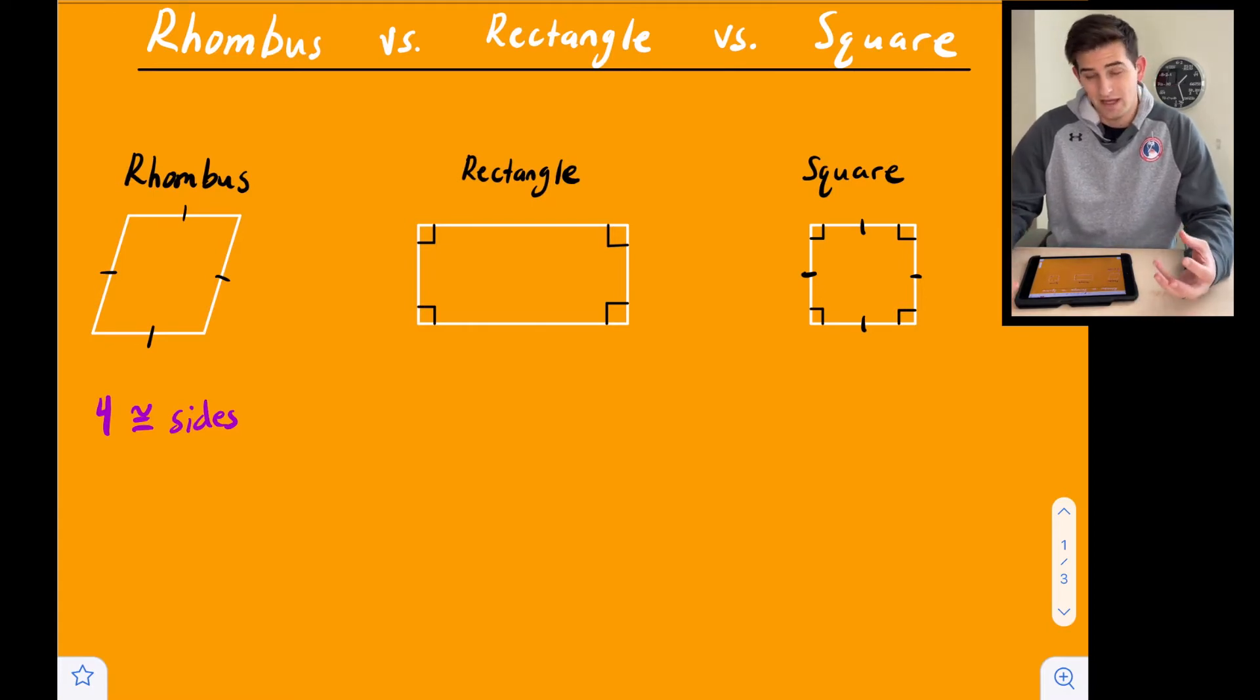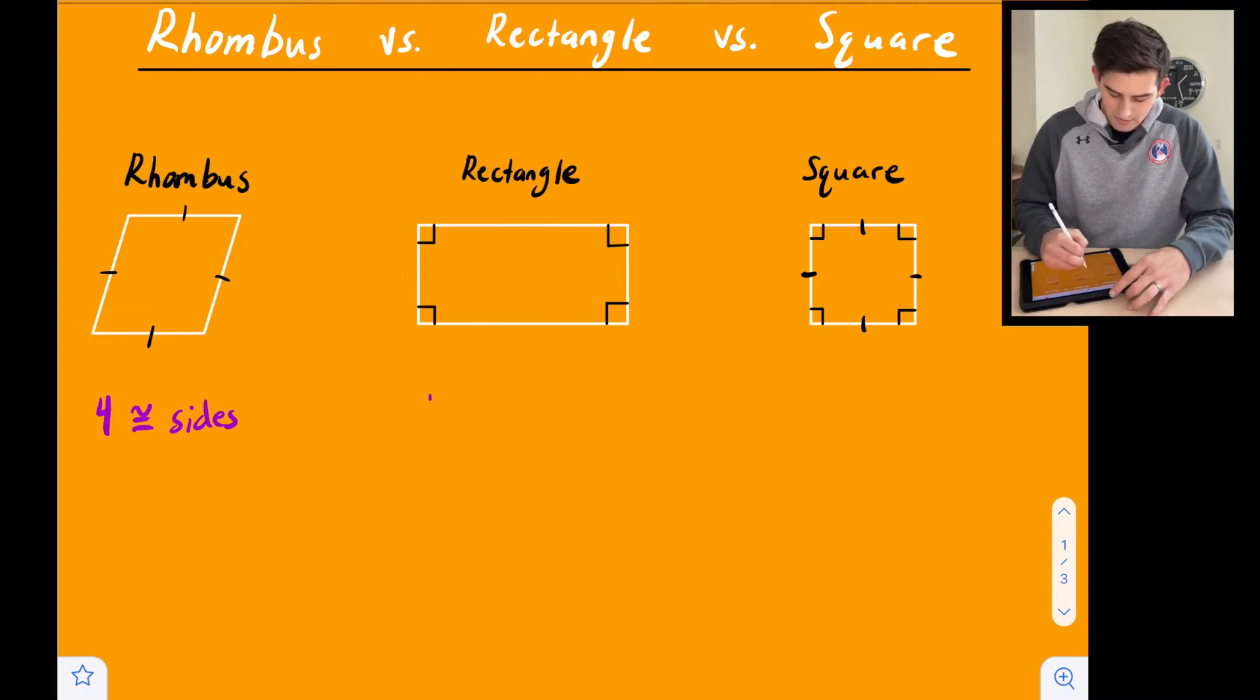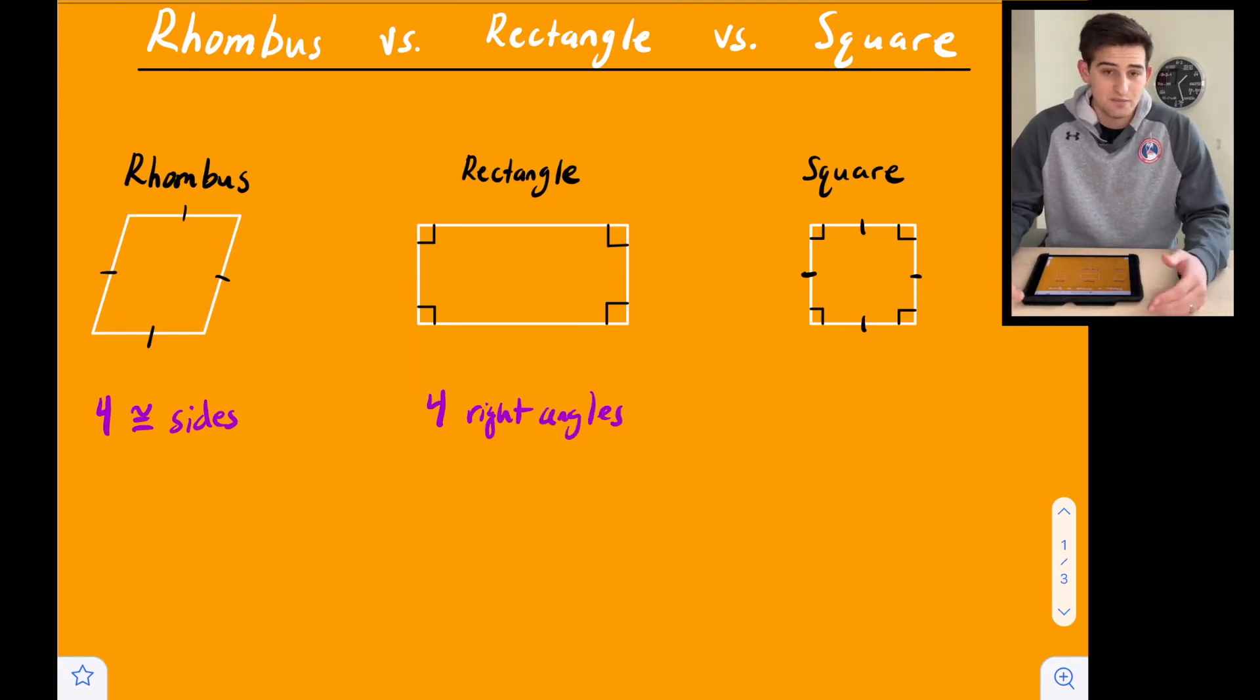Now a rectangle, we see we don't have the tick marks on the side, so those sides aren't all congruent. However, we do see right angle boxes. So we need to have four right angles. So a rectangle also looks like a parallelogram because it is. It's just a parallelogram that has four right angles.